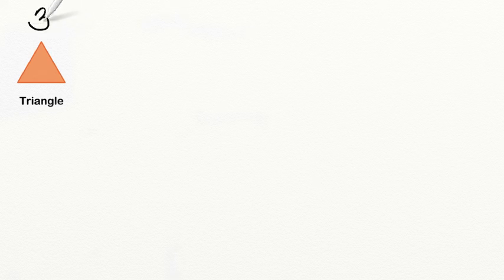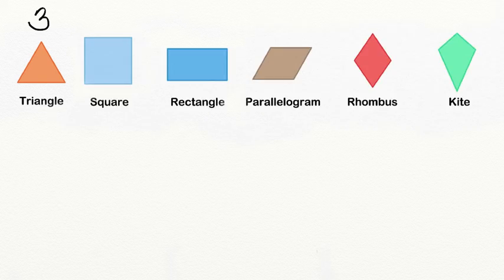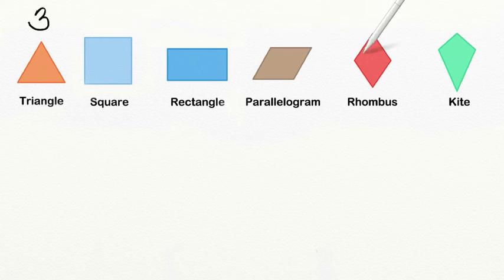Before we begin our practice today, let's go ahead and review what we name different polygons depending on how many sides they have. Any three-sided polygon is called a triangle. Four-sided polygons are called quadrilaterals. Some of them include square, rectangle, parallelogram, rhombus — also known as a diamond — and kites.